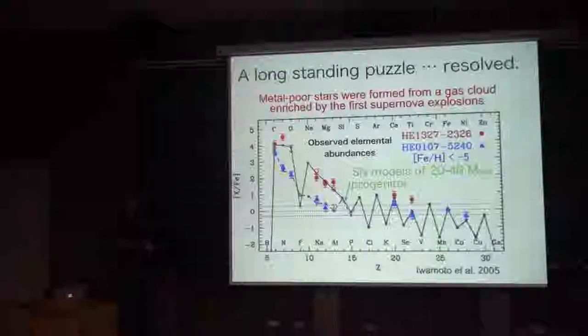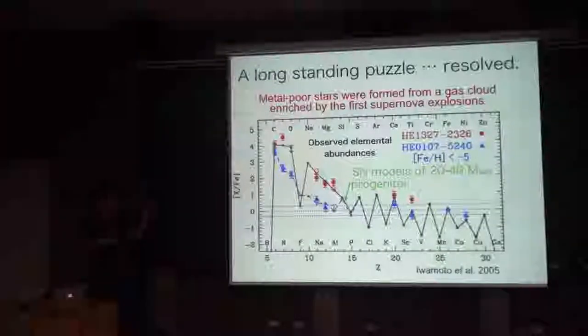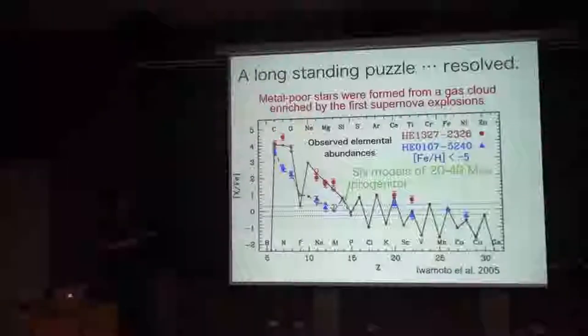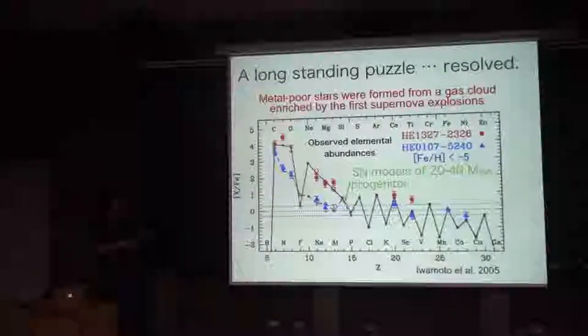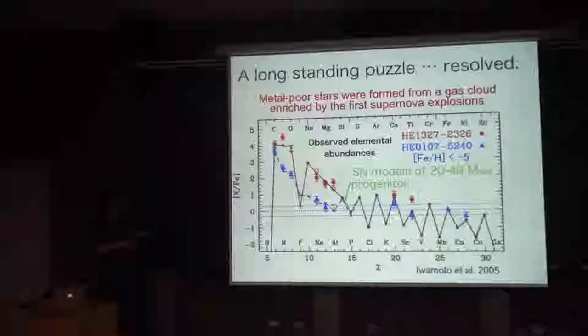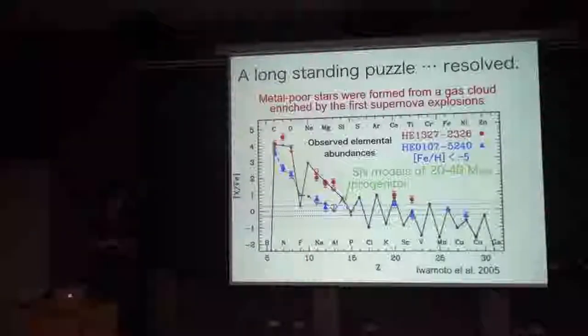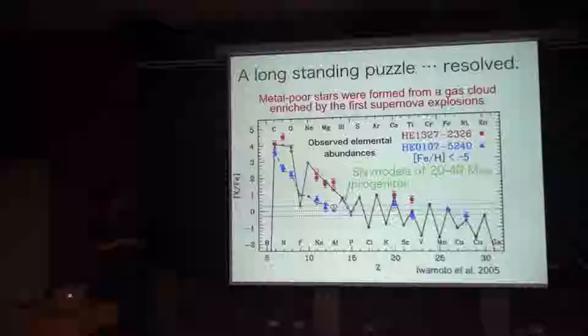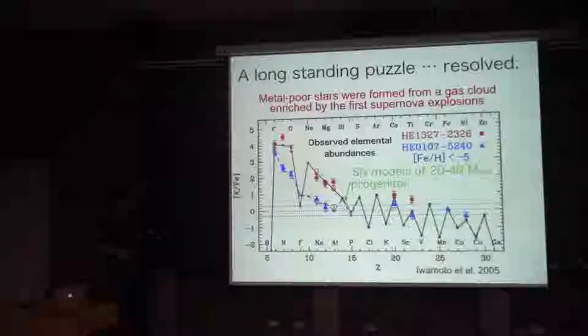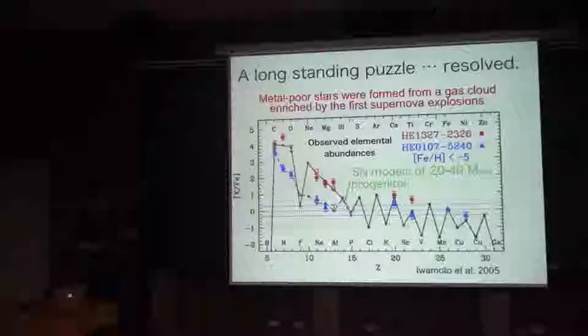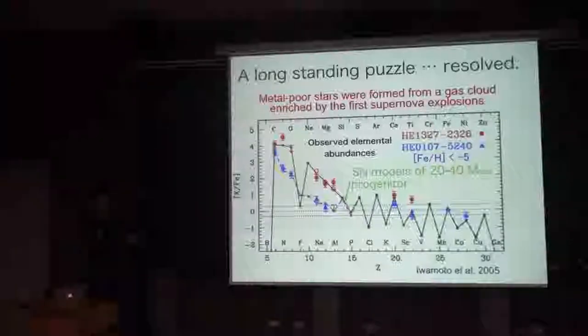to form the next generation star. The theory here is these observed normal and extremely metal-poor first stars are actually the second generation stars enriched by the first generation of supernovae. So this is a very nice success of our calculation together with the most recent observations.